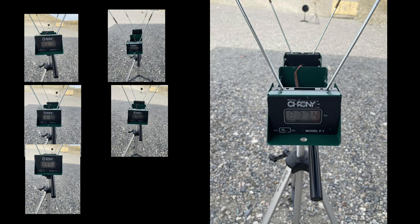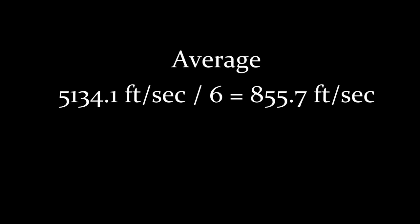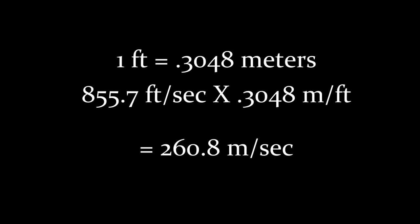We've got our six shots. We're going to add up all of the various feet per second velocities here, divide that by six, and we've got an average velocity of 855.7 feet per second. We know there are 0.3048 meters per foot. We can take 855.7 feet per second, multiply it by 0.3048 meters per foot, and it ends up being 260.8 meters per second.